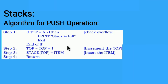Top is initially set to minus one, pointing to null. When we increment by one, minus one plus one gives zero, so top becomes zero — pointing to the first index in the array. Step three: stack[top] equals item — the element to be pushed is placed at that location. Step four: return the item.